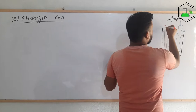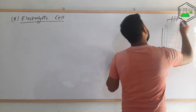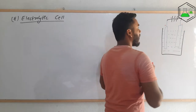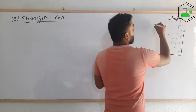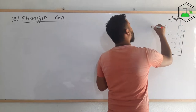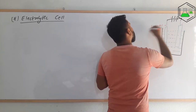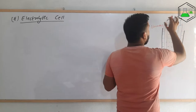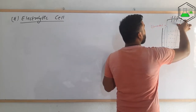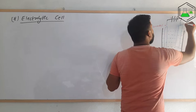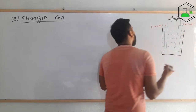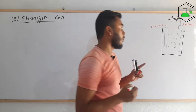The electrode which has the positive sign is also called the anode, or the electrode connected to the positive terminal. Similarly, the electrode connected to the negative terminal is also called the cathode. I will tell you why these are called anode and cathode.